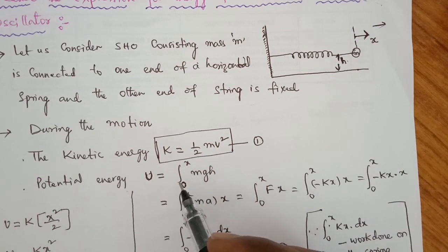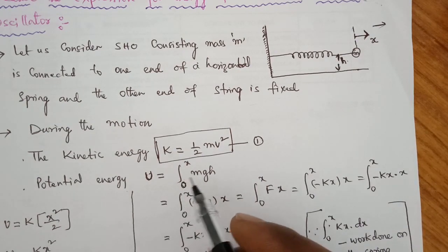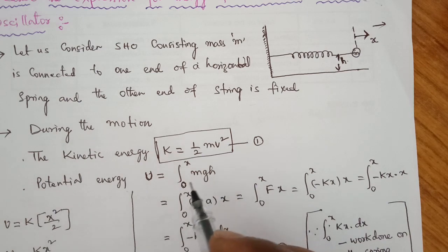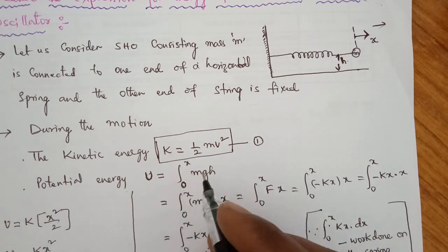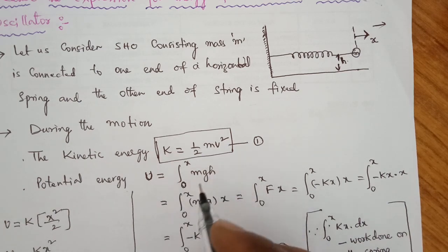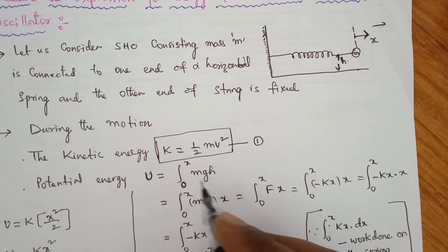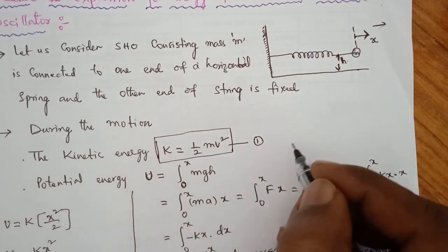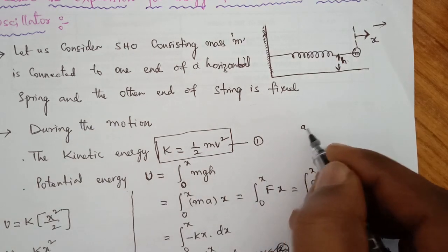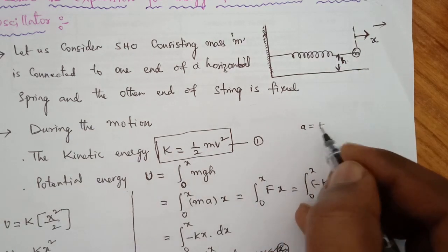To find the average potential energy, we apply integration from zero to x of mgh, where mg is the force, and h equals x, so the integration becomes integration from zero to x of F dx, where F equals ma and also F equals minus kx.